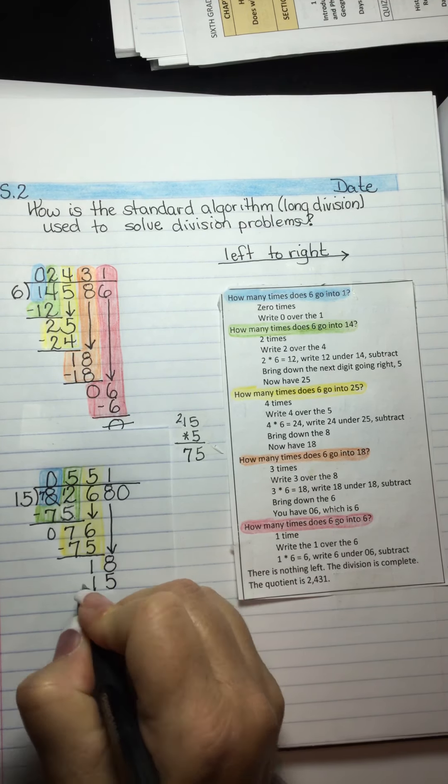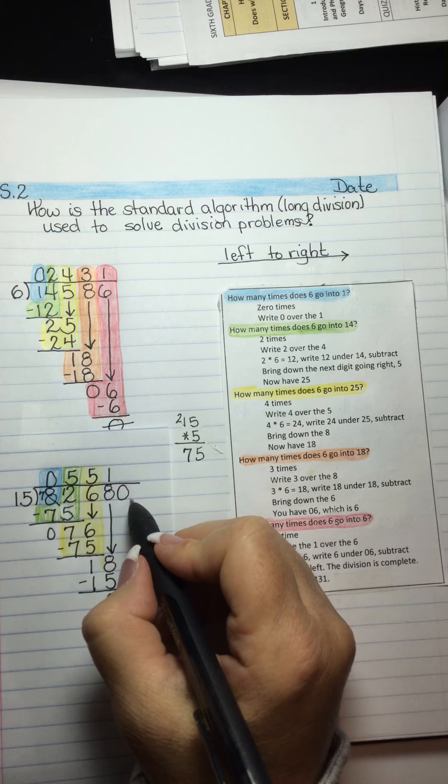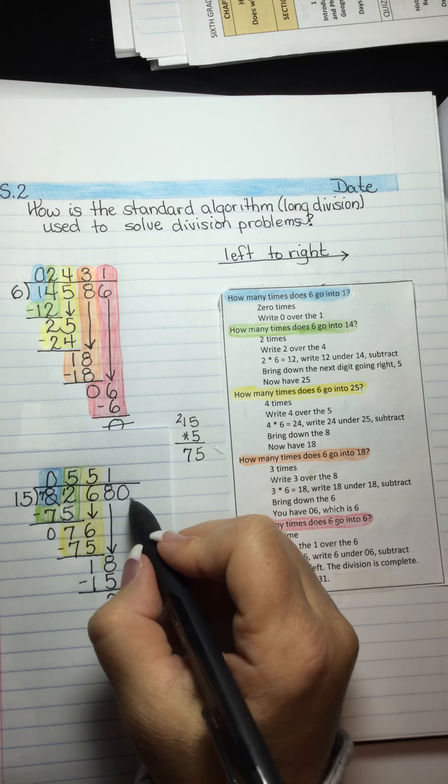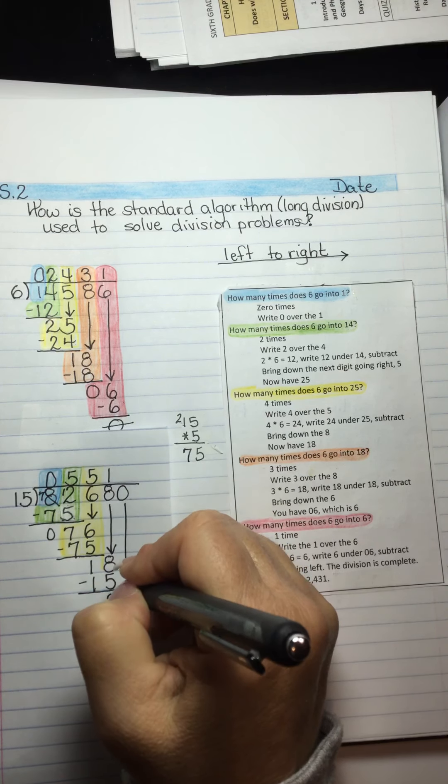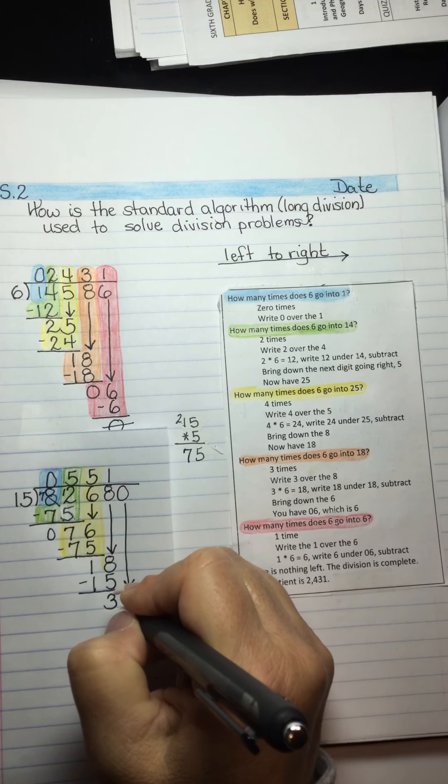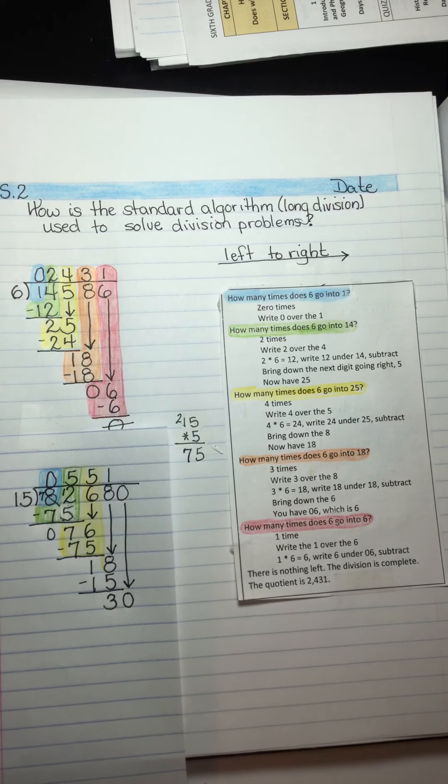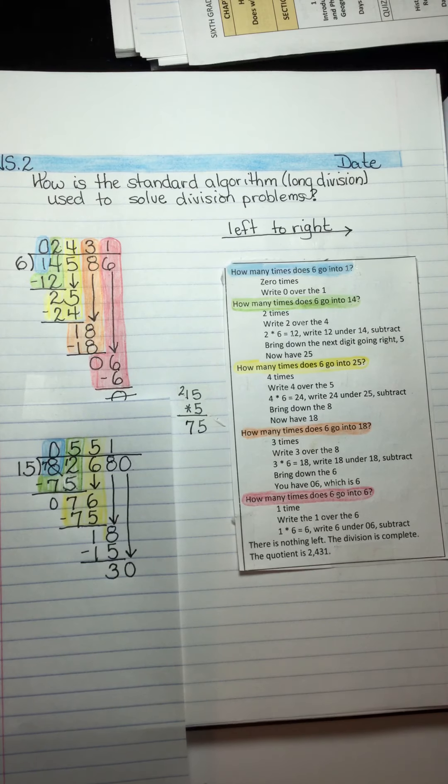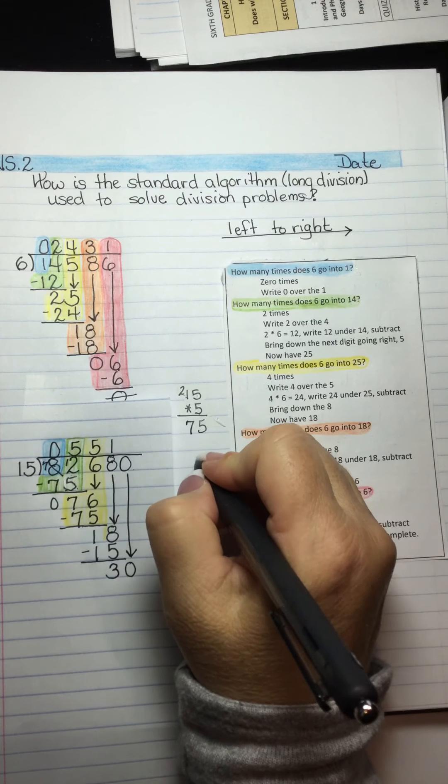And even though there's a 0 here, it's still a digit in the dividend. Don't forget that 0. You still have to deal with it. You can't ignore it. So you're going to bring it down. And you're going to ask yourself now, how many times does 15 go into 30?